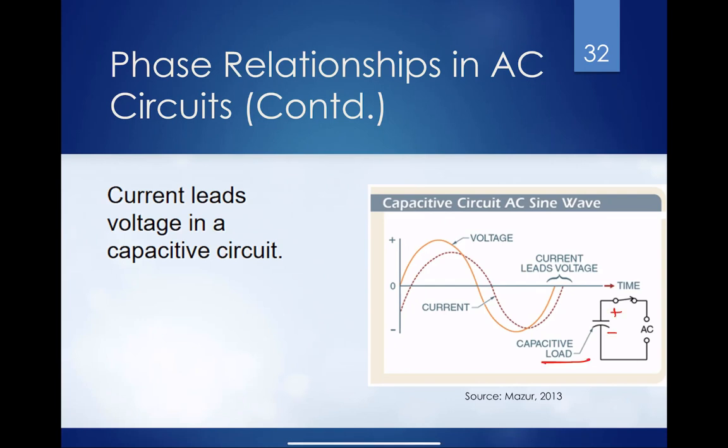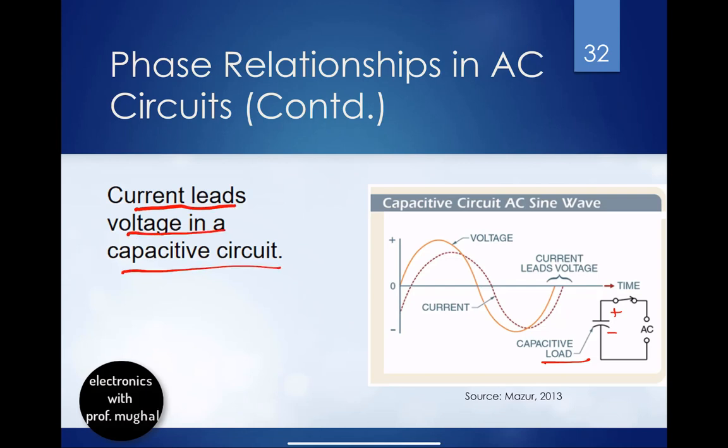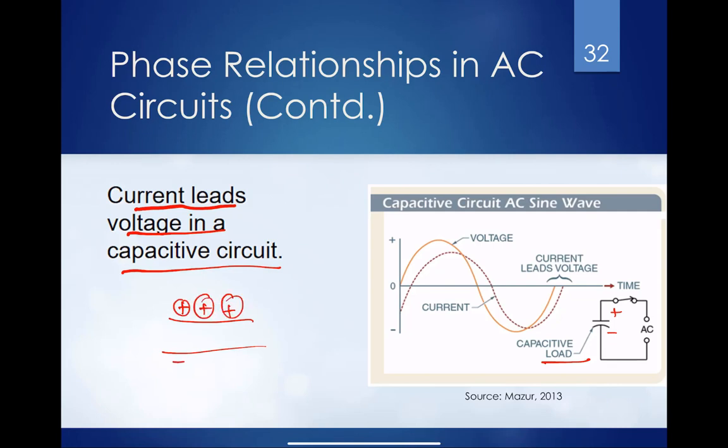You have this capacitive load here. Now in the case of the capacitor load it's the opposite. Current leads the voltage in a capacitive circuit. Remember, your capacitor inside has these charge plates which have opposite charges. The current is going to lead the voltage. It's true because the current will have to go past these two plates in the capacitor where charge is being stored.